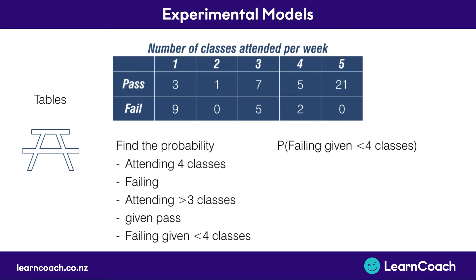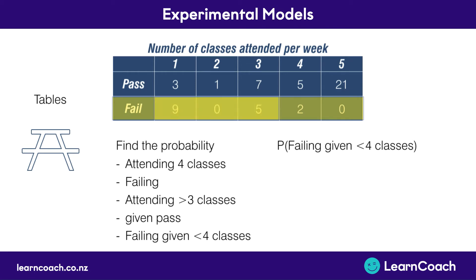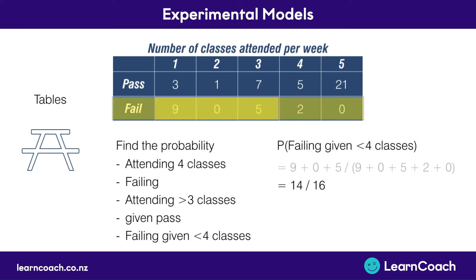For our last table example, we're finding the probability of failing given the student went to less than four classes. We look at the failing row and identify those for 1, 2, and 3 classes. We add the failing events — 9 plus 0 plus 5 — and divide by the total number of fails: 14 divided by 16, which equals 0.875.